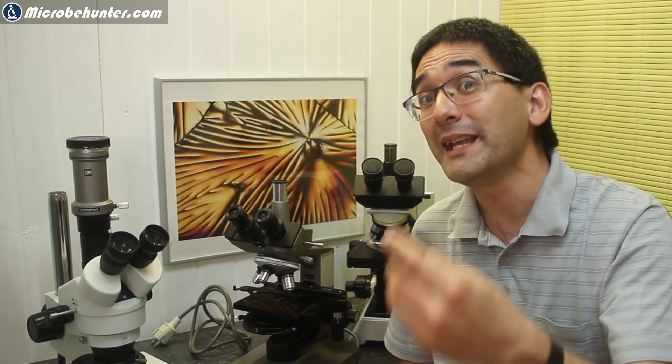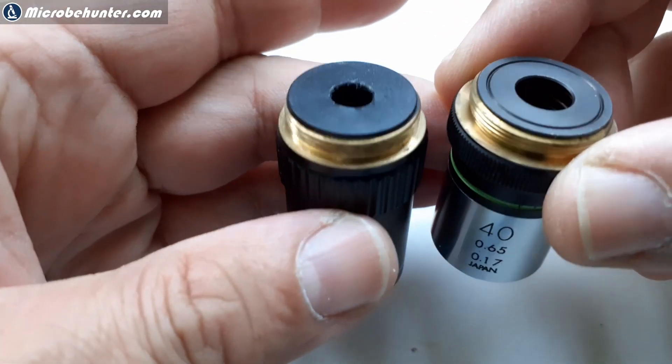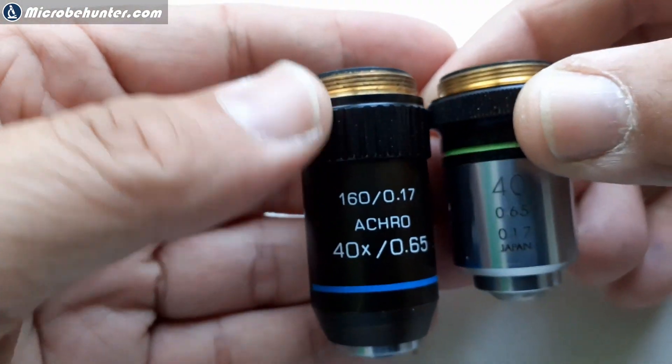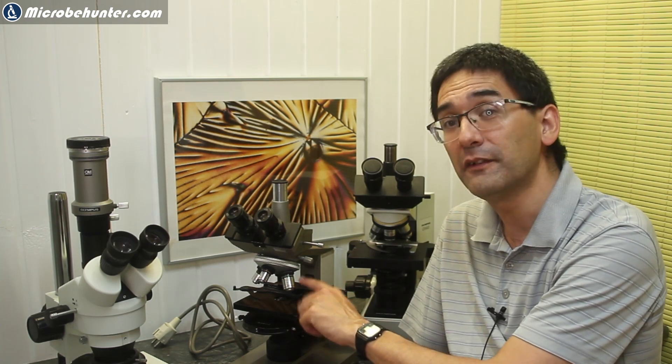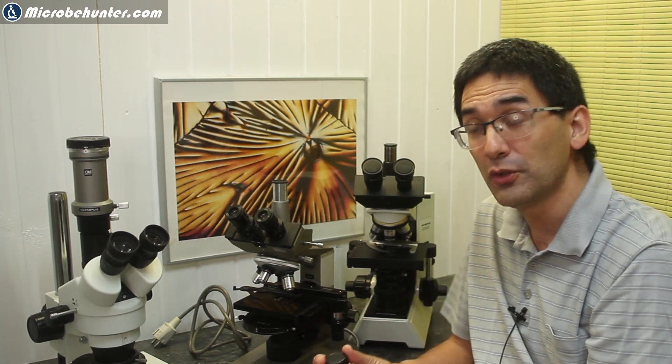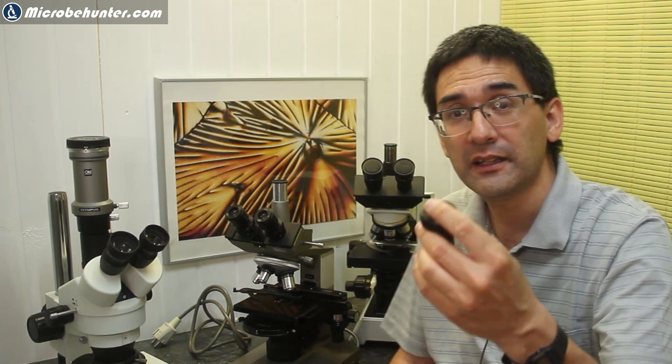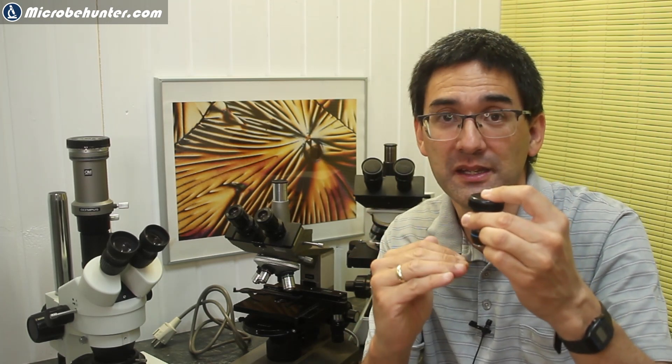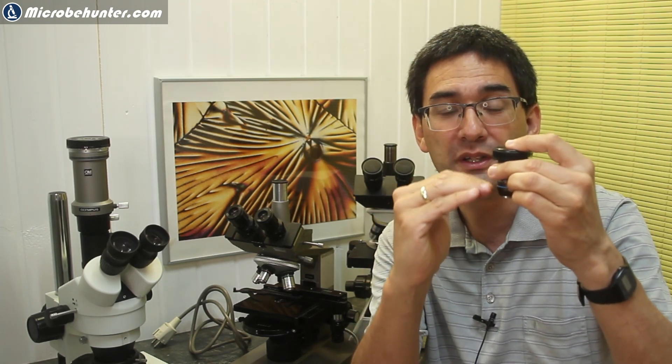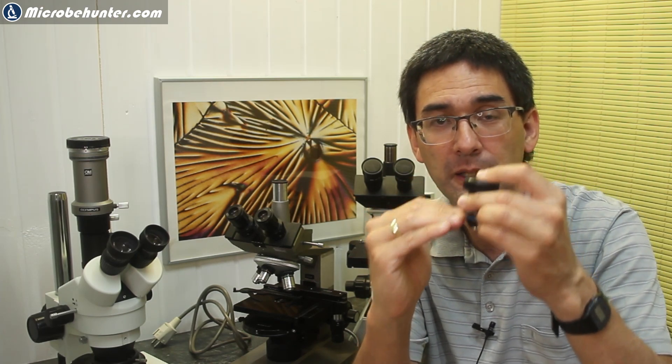If you want to exchange the objectives now, there's a problem, or there might be a problem. Even though you can exchange it physically, the threading is the same, you have to be careful that there is indeed enough space between the stage and the revolving nosepiece. This means you have to be able to lower the stage sufficiently that the large objective also still has space. If you're not able to lower the stage all the way, then you're not able to mount the objective.